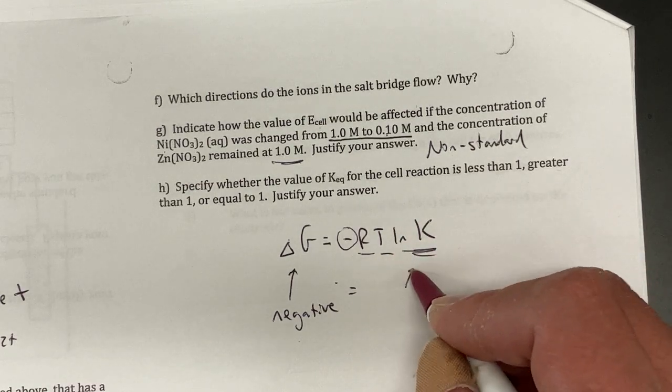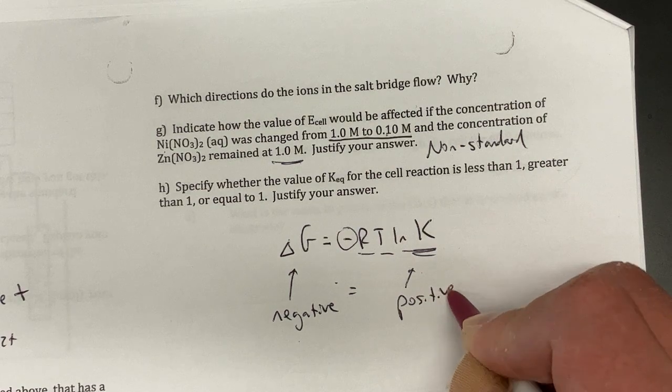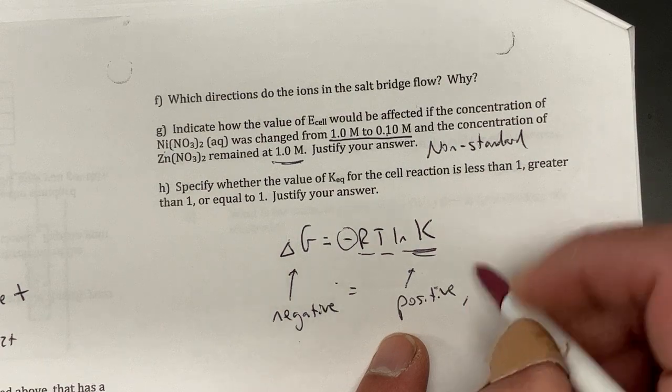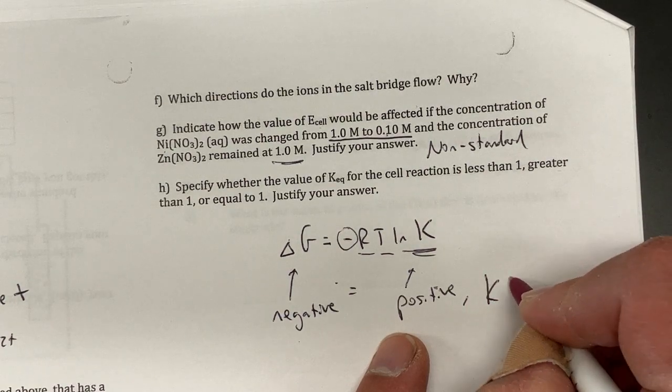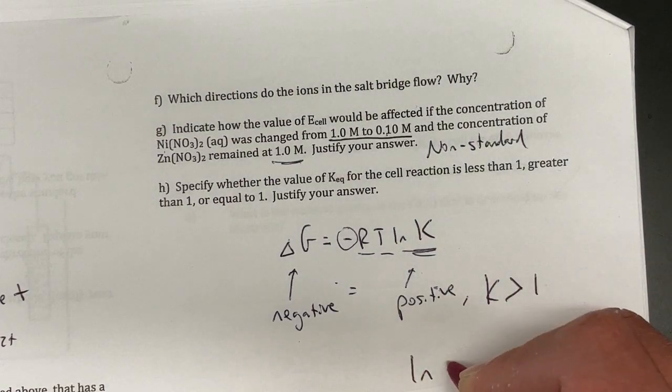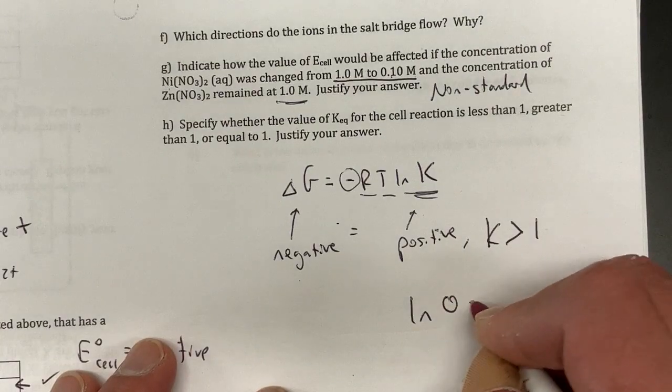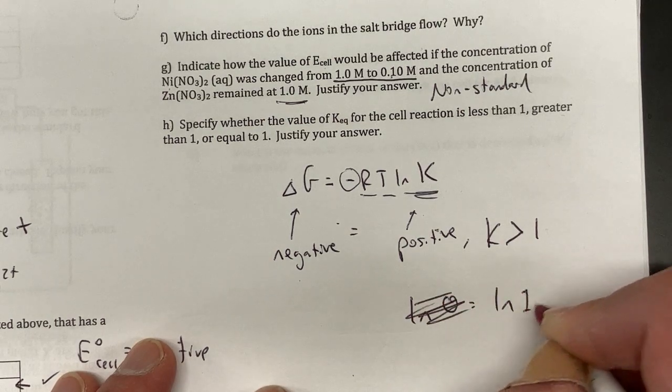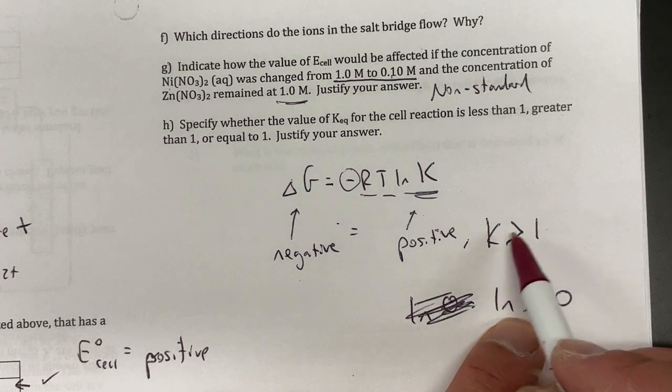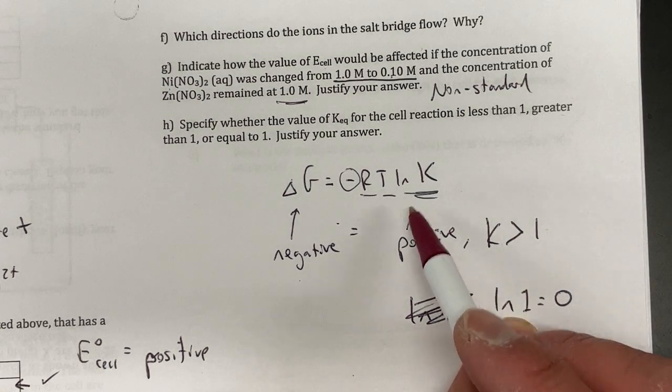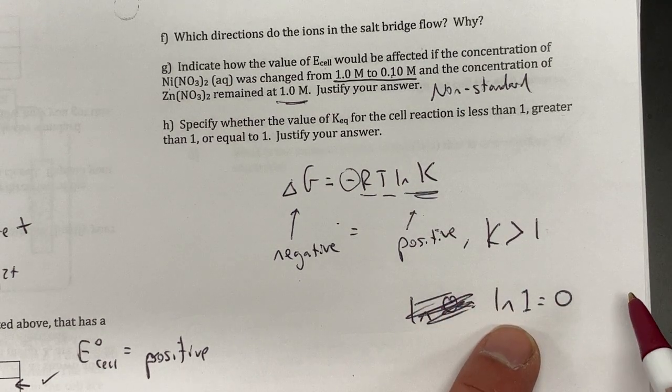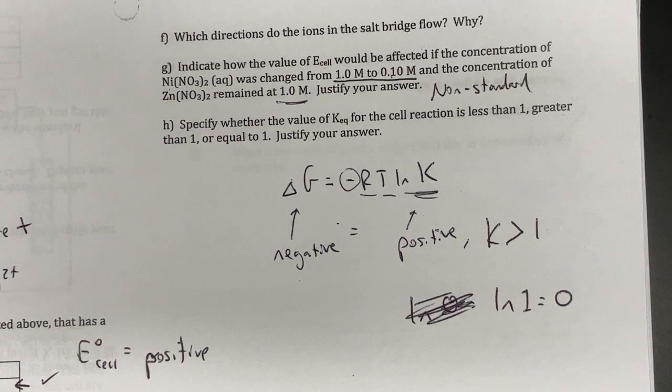If ln of K is positive, well that means K has to be greater than 1. Because remember if ln of 1 equals 0, so if anything is bigger than 1, like K is bigger than 1, that means the ln of K is going to be greater than 0. All right, that's how you solve an electrochemistry question.